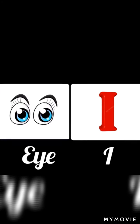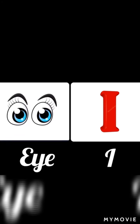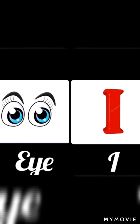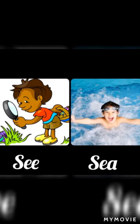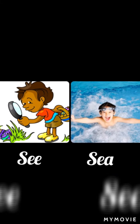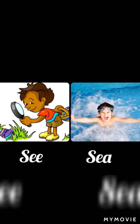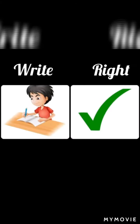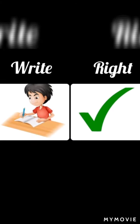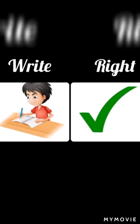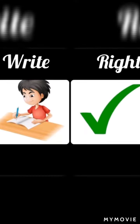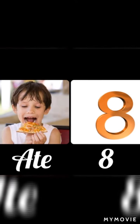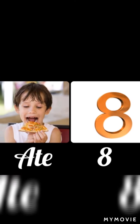'Eye' — we can see good things with our eye. And 'I' — I am very smart. 'See' which means to look, and 'sea' — I love to swim in the sea. 'Write' which means to make note, and 'right' which means a direction.